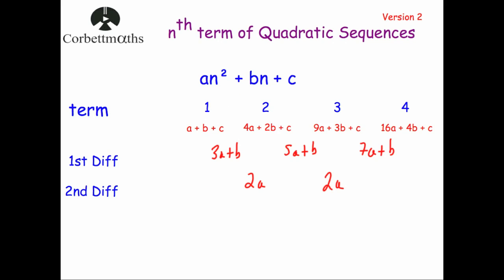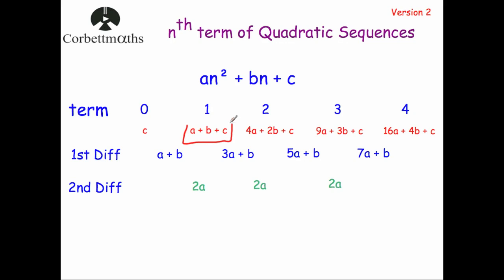So what we're now going to do is look at what the zeroth term would be. The zeroth term of a sequence is quite useful to work out what a, b, and c are. As you notice here, it's gone 3a plus b, 5a plus b, 7a plus b. If we go back, the second difference would be 2a again, so the first difference before that is going to be a plus b. And if we take that away from the first term, you'd just be left with c. So the zeroth term in the sequence is equal to c. The second differences are always equal to 2a, and the zeroth term is equal to c. So if we know the numbers, we can work out a, b, and c using the zeroth term, the first term, and the second differences.